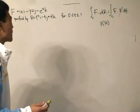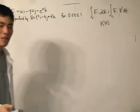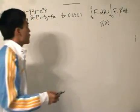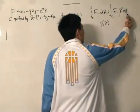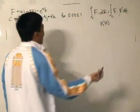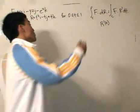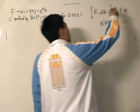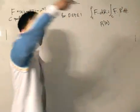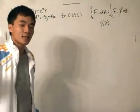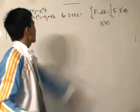Some general pointers: the position vector is of vital importance because it forms the link between the variable t and the x, y, and z. Once you dot the two together, you get a function that is solely in t, and then you can integrate.